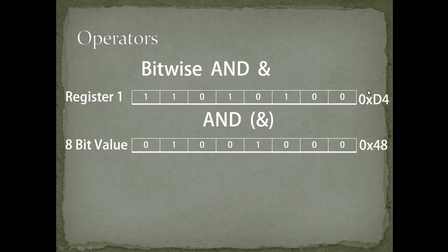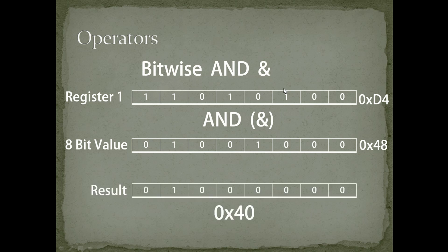Now taking the same register 1 with value 0xD4 and an 8-bit value 0x48, if I AND these together: 1&0=0, 1&1=1, 0&0=0, 1&0=0, 0&1=0, 1&0=0, 0&0=0, 0&0=0. So I am getting the result as 0x40.